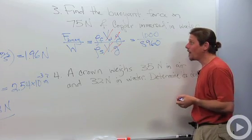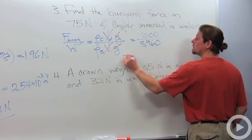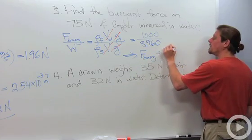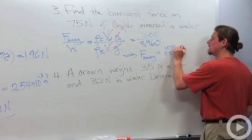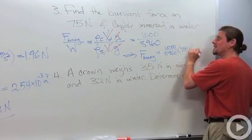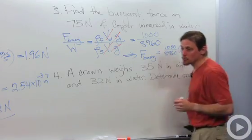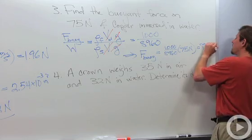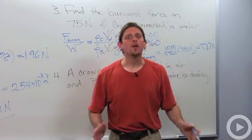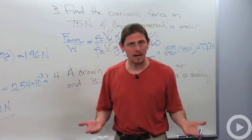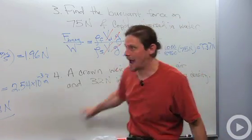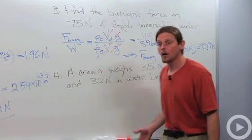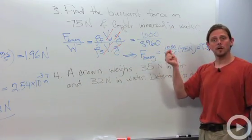Now all I need to do to get the buoyant force is just multiply by the weight. F buoyant equals 1,000 over 8960 times 75 newtons. When we carry through that multiplication, we end up with 8.37 newtons, which is wonderful. It was quick and there was very little opportunity for us to make a mistake, which is not the case if we were to go back through all that business in Problems 1 and Problem 2.